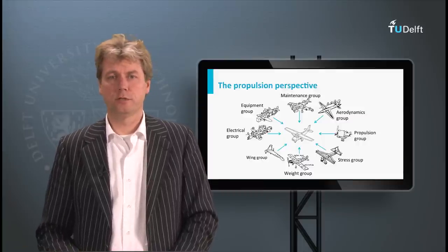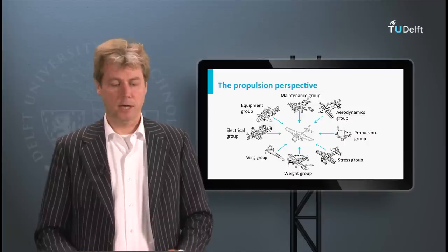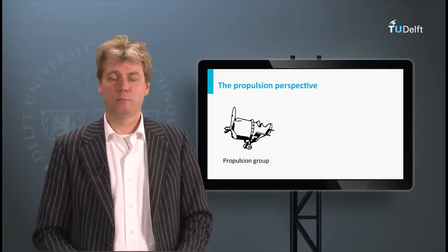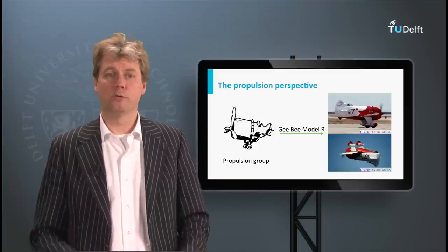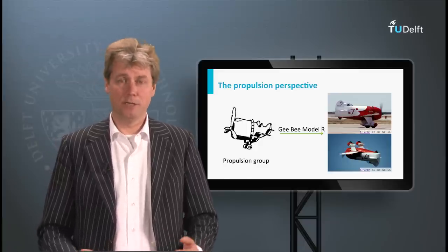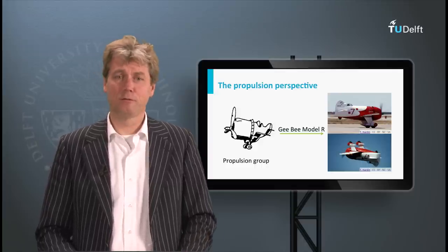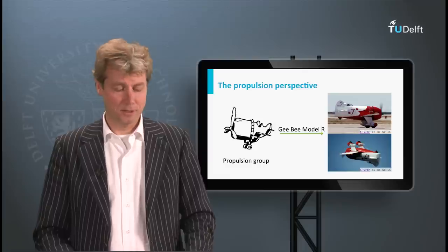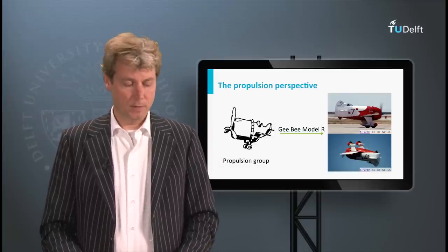In one of the first lectures we showed this picture, where we have the view of all the different groups on the aircraft, and every group had its own view. Today it's time for the propulsion group, so their view dominates today. You might be surprised that this aircraft actually does exist — it's the GB, a racing aircraft for air races around two poles. They optimized their design in terms of propulsion, and this resulted in an aircraft which is basically a flying engine with little wings. It's a dangerous aircraft in terms of handling qualities. If you reduce speed and end up close to stall speed, it's very dangerous and unable to recover. But today we will look at this engine and the jet engine as well, and look at the basic principles.